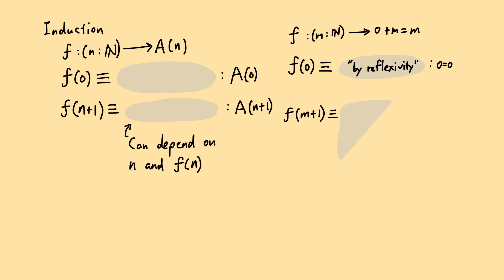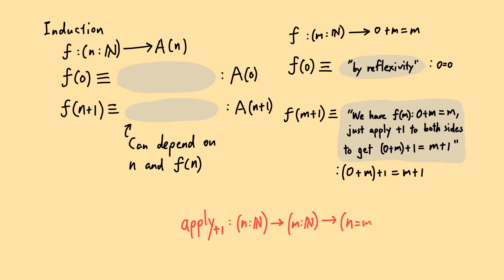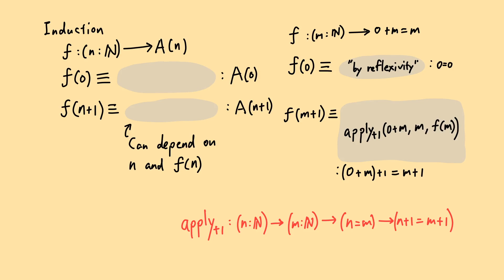Next, we need to prove 0+m+1 equals m+1. We can move the parentheses using the definition of addition. The definition of f(n+1) can depend on f(m), which is an element of 0+m equals m. And we can just apply +1 to both sides to finish the proof. When I say plus 1 to both sides, I'm really citing a theorem that says if n equals m, then n+1 equals m+1, which is really a function. If you call this function apply₊₁, then we can define f(n+1) using this expression instead of words.